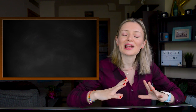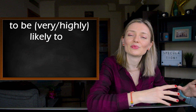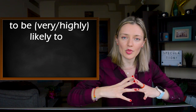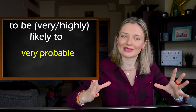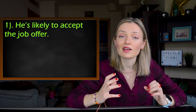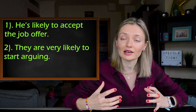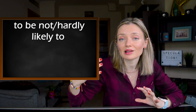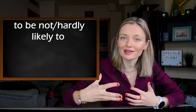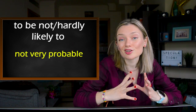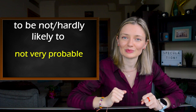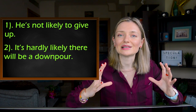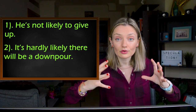Number seven: we can use 'to be likely to,' or add 'very' or 'highly' — 'to be very/highly likely to' — which means something is very probable. For example: 'He's likely to accept the job offer,' and 'They are very likely to start arguing.' The opposite is 'to be not likely to' or 'to be hardly likely to,' meaning something is not very probable. For example: 'He's not likely to give up,' and 'It's hardly likely there will be a downpour.' A downpour is when there is a lot of rain in a short time.